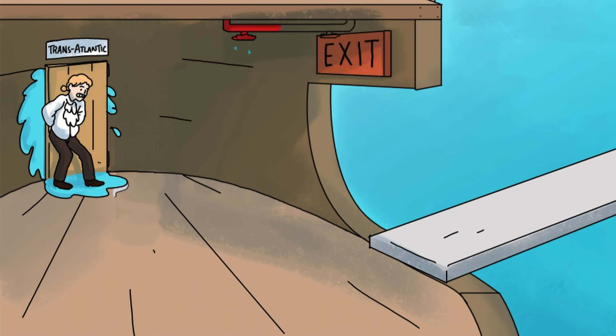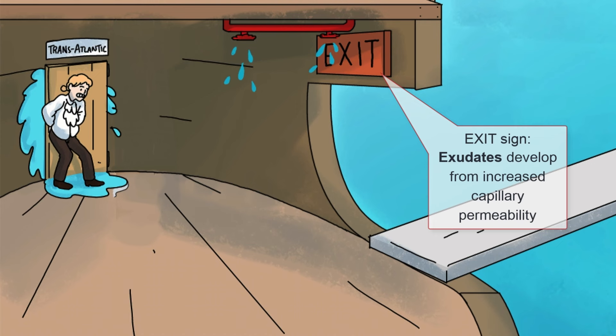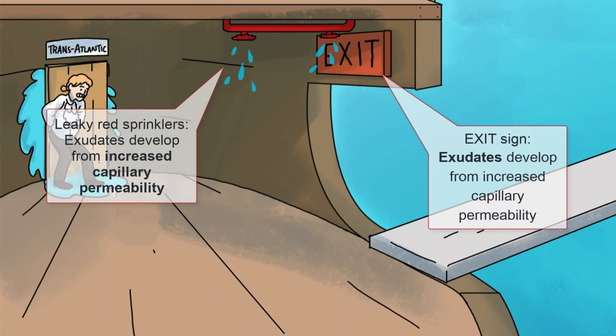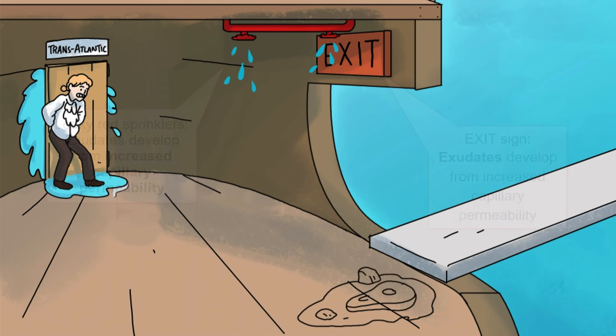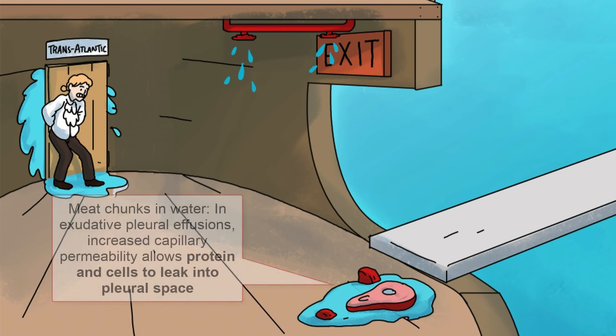Exudates, on the other hand, are caused by increased capillary permeability. At Sketchy, exudates are represented by a recurring exit sign, and capillary permeability by these leaky red emergency sprinklers. In exudative pleural effusions, increased pleural capillary permeability allows protein and cells — represented by these tasty meat chunks — to leak into the pleural space.